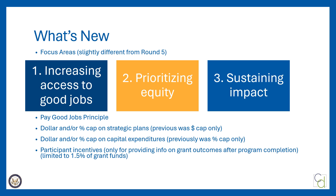Round 6 FOA requires applicants to address the pay good jobs principle by proposing strategies or activities that connect workers residing in the WORK region with training or employment opportunities in industry sectors that pay wages of at least $15 per hour. If an applicant proposes work-based training funded or reimbursed by grant funds, they must ensure they connect participants to partner employers that pay at least $15 an hour. Review page 4 for the definition as well as strategies that could meet the pay good jobs component. Round 6 also puts a dollar and/or budget percentage cap on strategic plans — applicants may propose to expend no more than 50% of their grant award or $100,000, whichever is less, on planning activities. See page 14 of the FOA for more explanation.